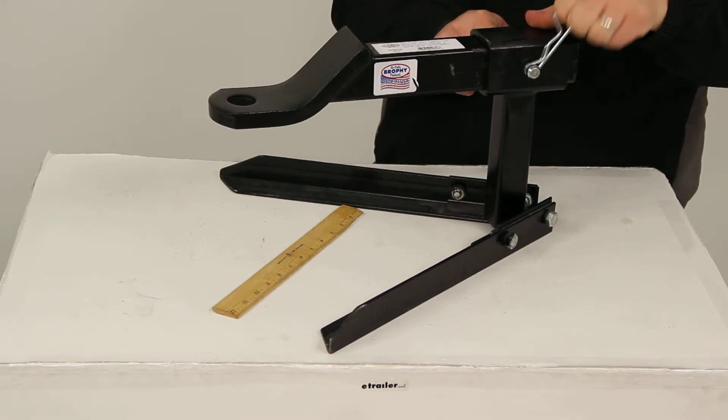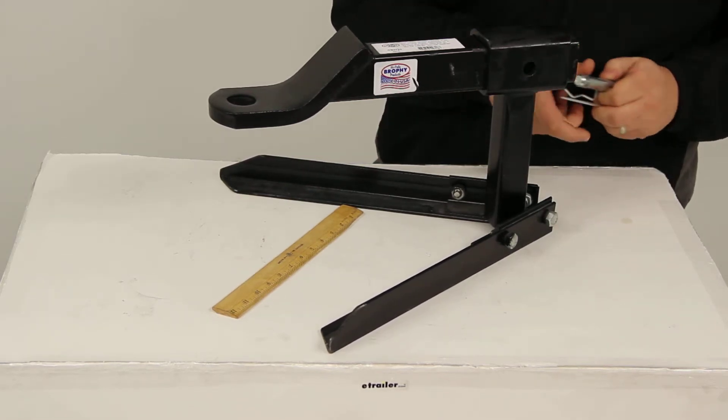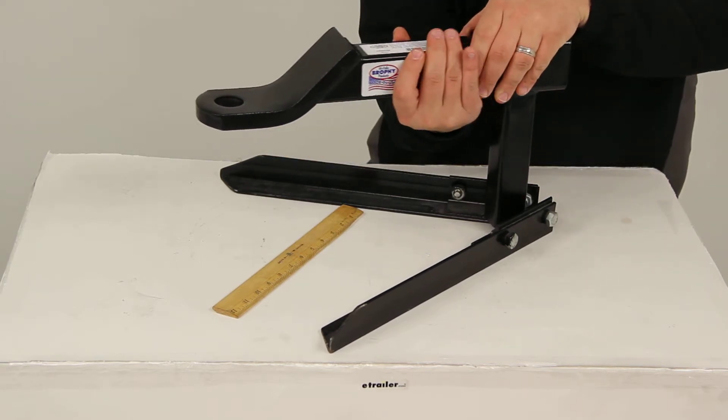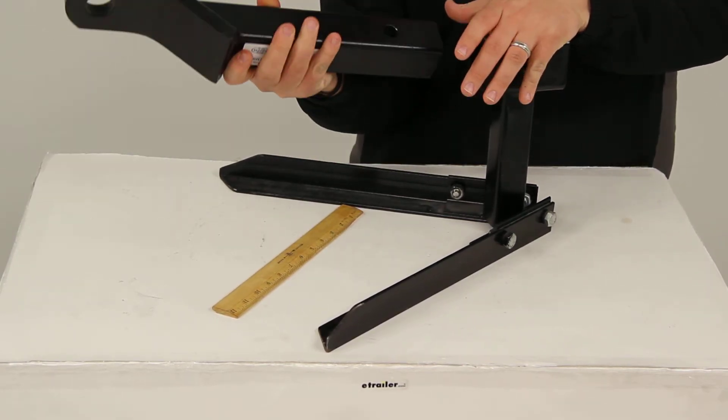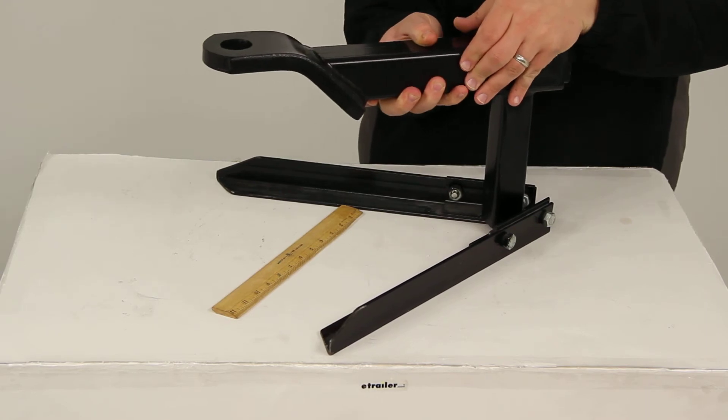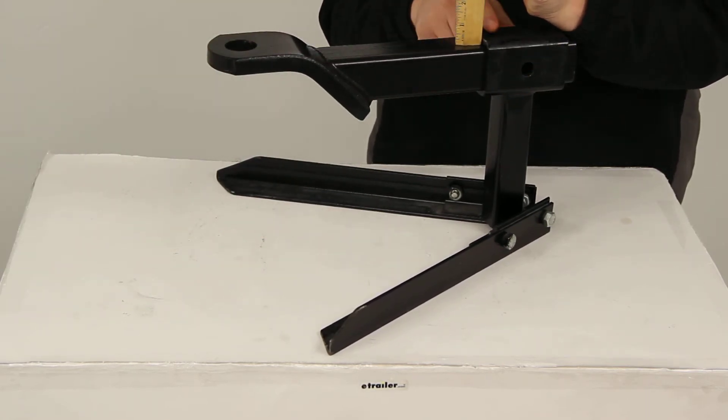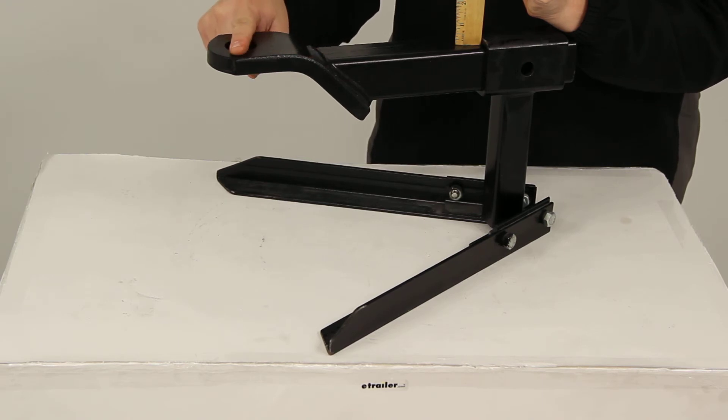Now this is available in the rise position as well to help ensure a more level tow. All we need to do is take our mount and flip it over to that rise position, and if we perform that same measurement inside top edge to the top of the ball platform, it is going to give us a rise of 3 quarters of an inch.